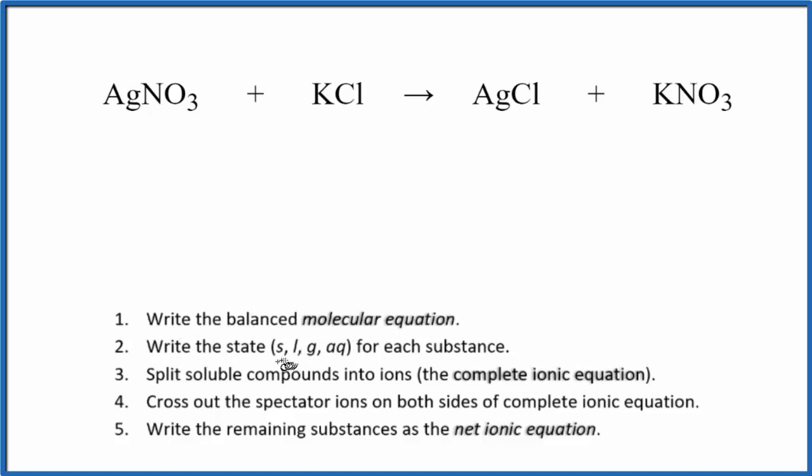The second rule is we need to write the states. So when we look at this, we have AgNO3. That's going to be soluble. Nitrates are, in general, soluble. So we'll put aqueous after that. That'll be dissolved in water. And then chlorides, those are also normally soluble, especially with a group 1 element. Put an AQ after that. So both of those are dissolved in water.